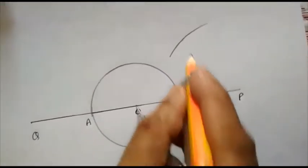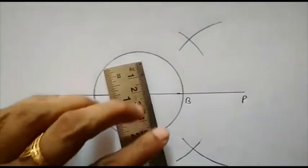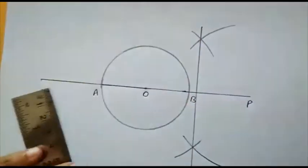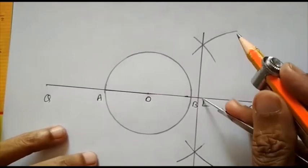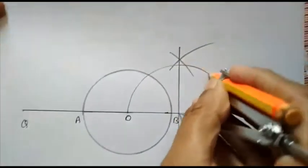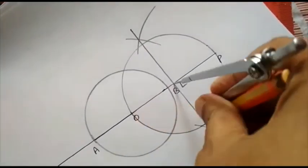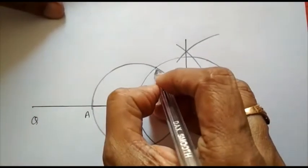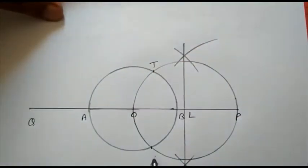Open the radius more than half and in this way, I will get the midpoint. Let L is midpoint of OP. With L as center and radius OL, draw a circle passing through O and P. This circle intersects the previous circle at T and S.